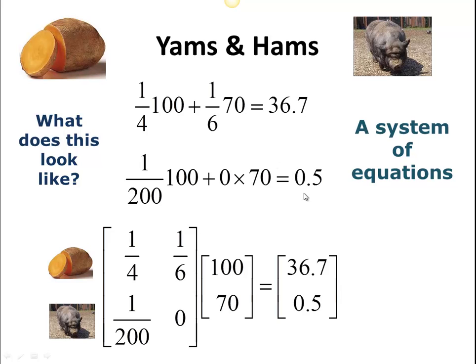On the right-hand side we have a matrix of the resulting numbers. The first row of the matrix is all about the yams, and the second row is all about pigs — how we're consuming our pigs. So I was trying to calculate some things intuitively, and then turn these two equations into a system of equations and then into a matrix.